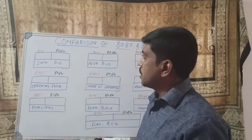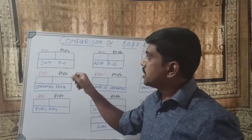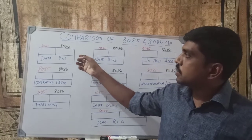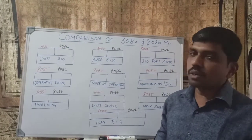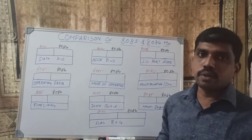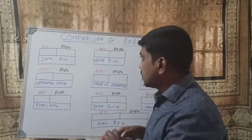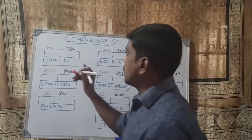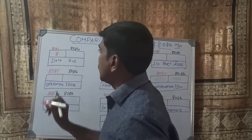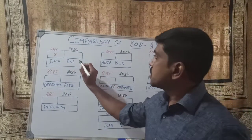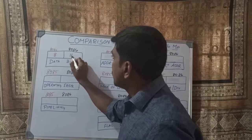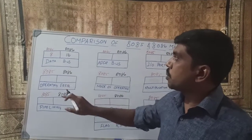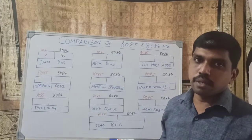The first property is data bus buffer. The data bus carries data to and from the microprocessor. In the 8085 microprocessor, it carries 8-bit data — it is an 8-bit microprocessor. In the 8086 microprocessor, it carries 16-bit data — it is a 16-bit microprocessor.